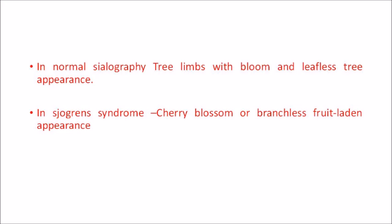Sialography is contraindicated in acute inflammatory cases. In normal sialography, it shows a 'tree limbs with blossom' or 'leafless tree appearance.' In Sjögren's syndrome, the salivary duct shows a 'cherry blossom' or 'branchless fruit-laden appearance.' So remember: normal sialography shows a leafless tree appearance, and in Sjögren's syndrome, it shows a cherry blossom or branchless fruit-laden appearance.